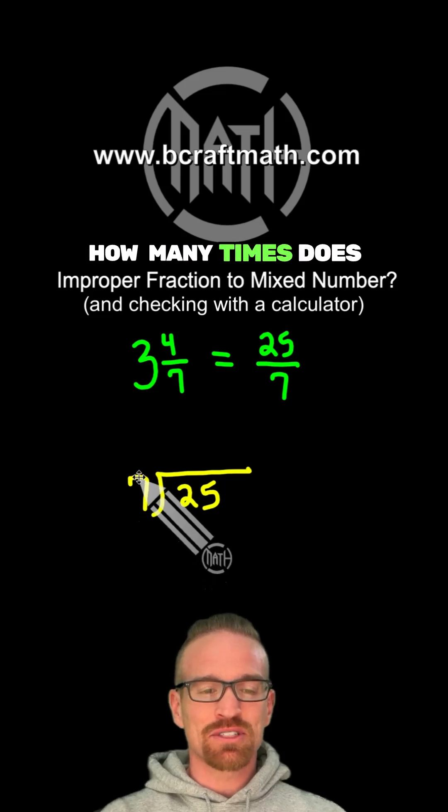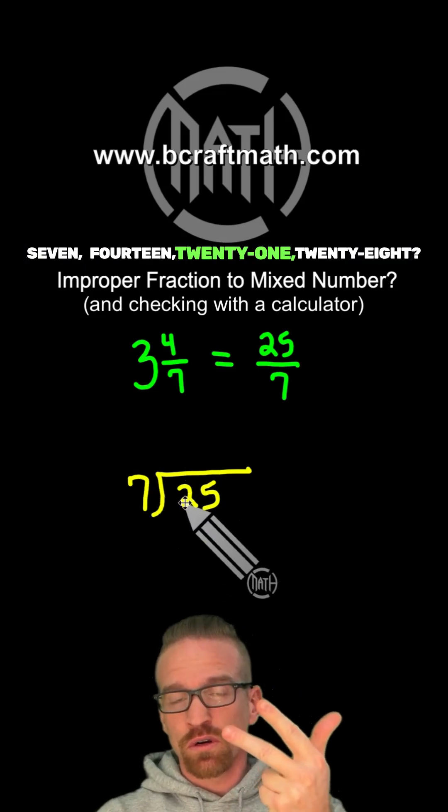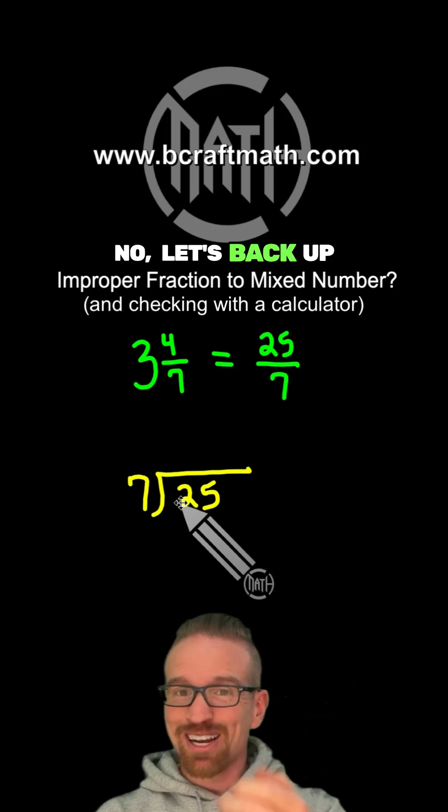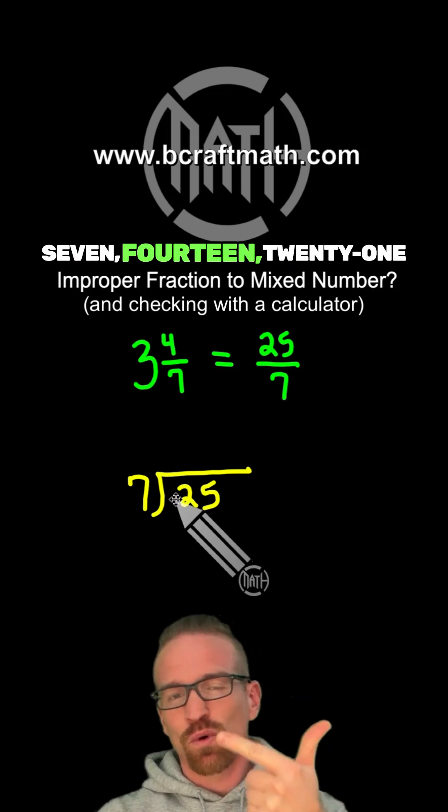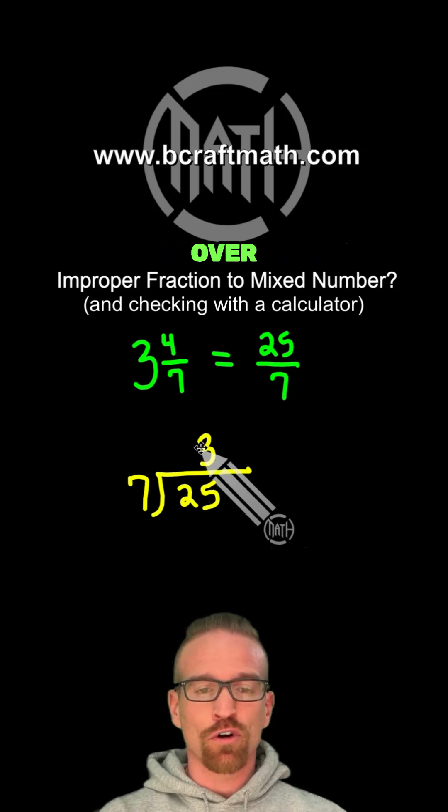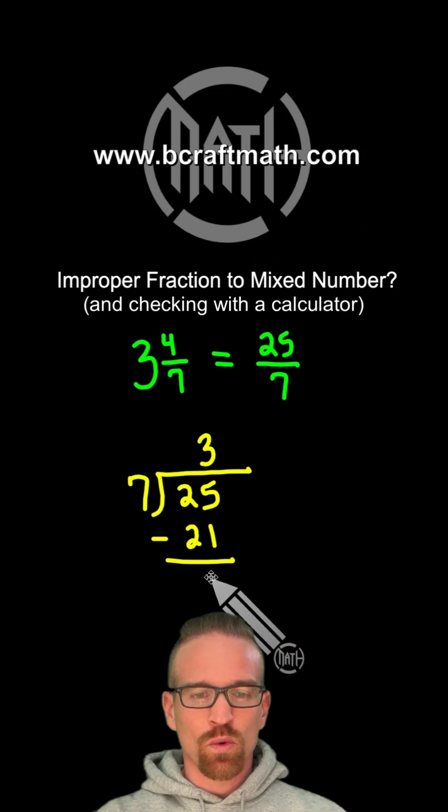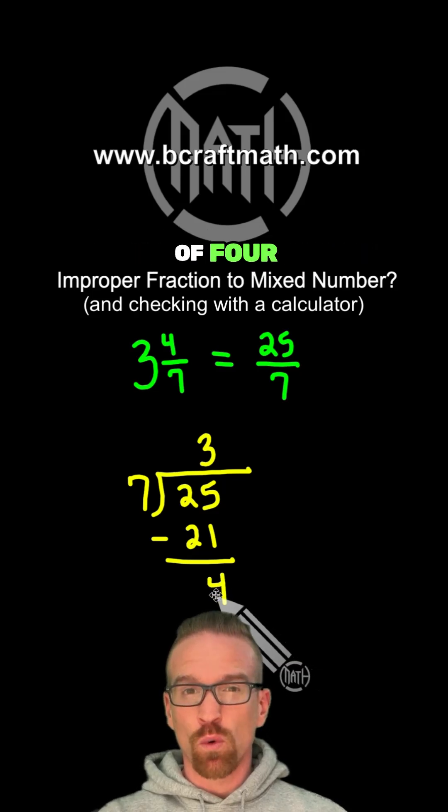How many times does 7 go into 25? 7, 14, 21, 28? No, let's back up. Just 3 times. 7, 14, 21. 7 goes into 25, 3 times without going over. 3 times 7 is 21. And if we take that 25 minus 21, we have a remainder of 4.